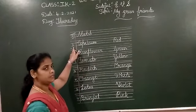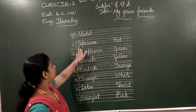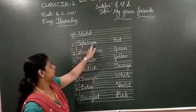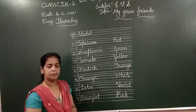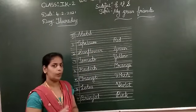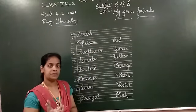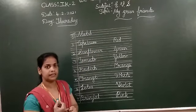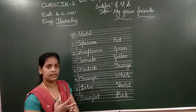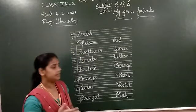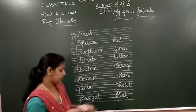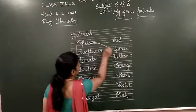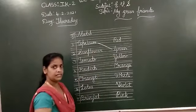The first one is capsicum. C-A-P-S-I-C-U-M. Capsicum. Capsicum is a vegetable. So capsicum is which color? We can see capsicum in red color, green color, and yellow color. So here we can match capsicum with green color.